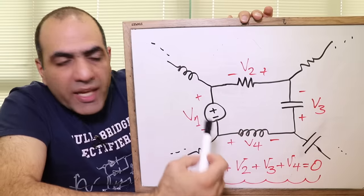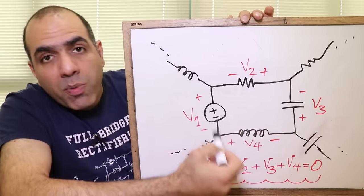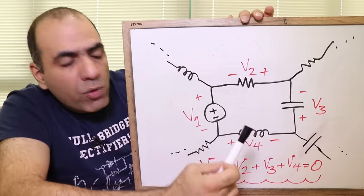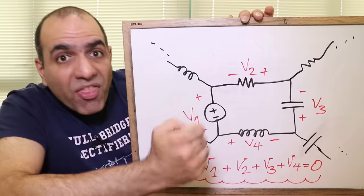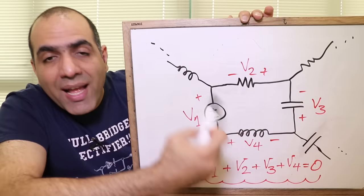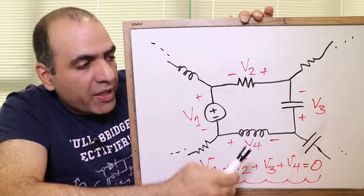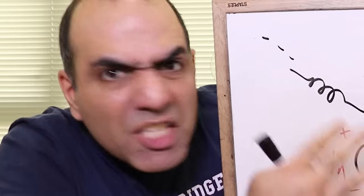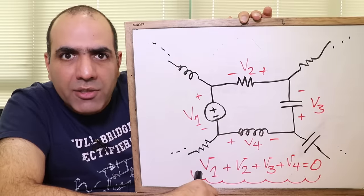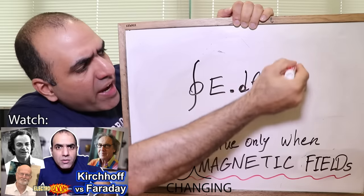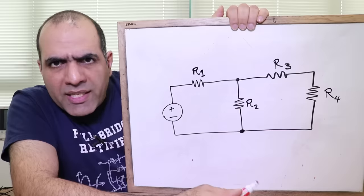Kirchhoff voltage law states that in any closed loop of a circuit, the sum of all voltages across components in that loop is zero. And that's based on the law of conservation of energy. And lumped model makes it easy. I'll talk about that later. According to my definition, KVL is not this. Let's expand it a bit.